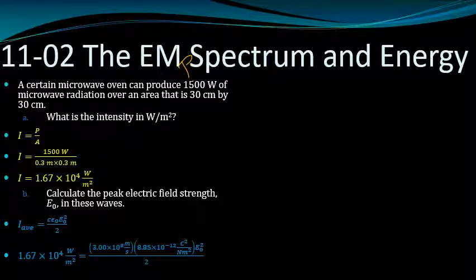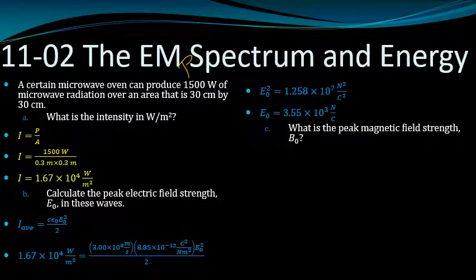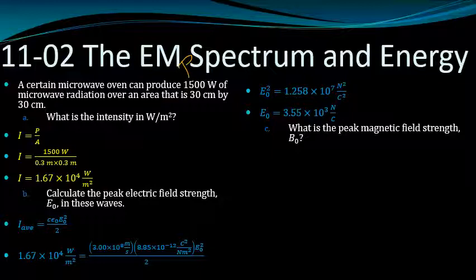We know the speed of light c is 3 times 10 to the 8th. Epsilon naught is 8.85 times 10 to the negative 12—that's a constant. So we just need to solve for electric field squared. Multiply by 2 and divide to get electric field squared. Take the square root, and we get 3.55 times 10 to the third newtons per coulomb, or volts per meter.